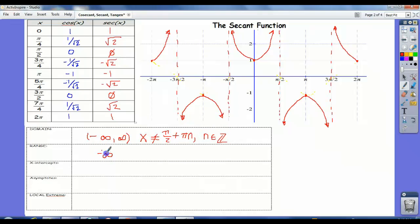The range is the same as for cosecant. X intercepts, there are no x intercepts, and the asymptotes we just described.